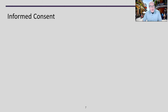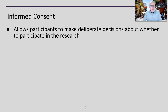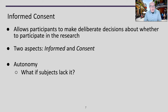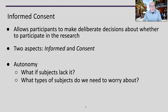Given all that, one of the key things in research ethics is informed consent. Informed consent allows participants to make a deliberate decision about whether to participate in the research. Two terms are critical: 'informed' — people know enough about what's happening to make a reasoned decision — and 'consent' — they actually decide to participate voluntarily. One concept we have to think about, especially with students, is autonomy. If somebody does not have autonomy, they don't have the ability to genuinely consent.